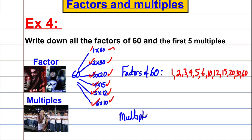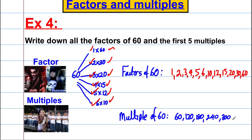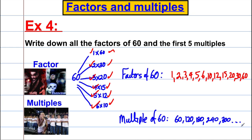The multiples of 60 are many 60s: 1×60=60, 2×60=120, 3×60=180, 4×60=240, and 5×60=300. That's factors and multiples done. I'll put a set of questions up for you — you have 10 seconds to pause the video, then I'll put the answers up.